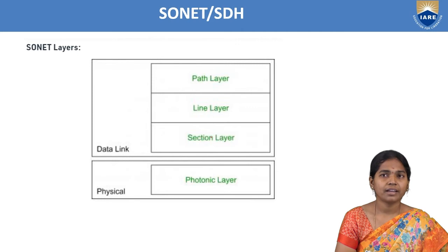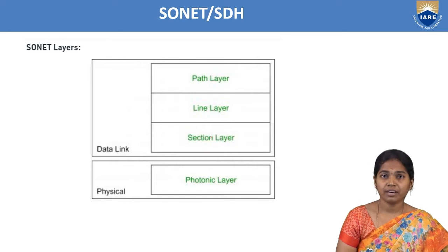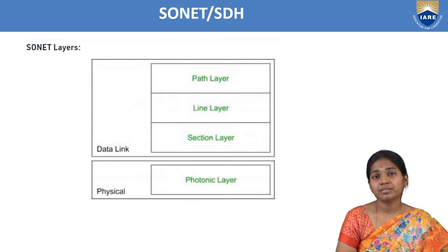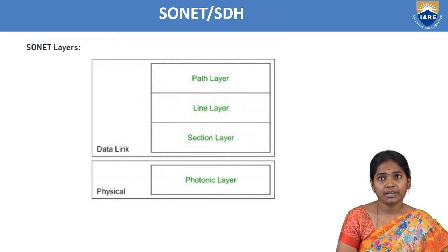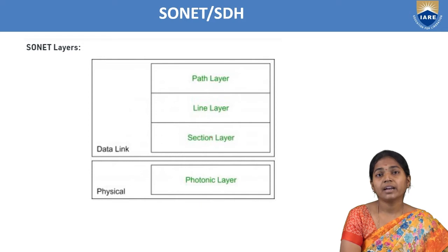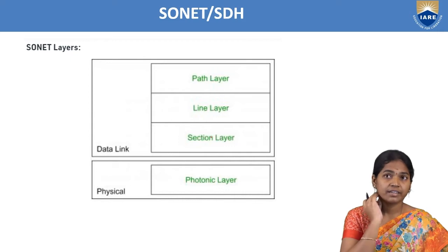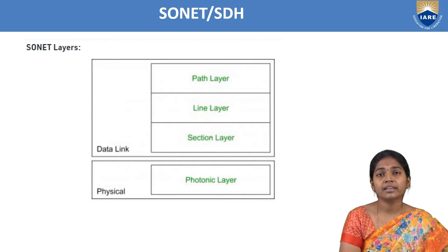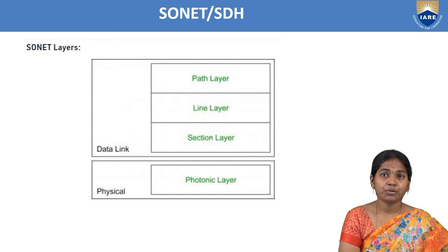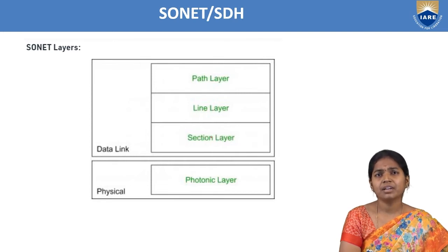Path layer, line layer, and section layer come under the data link layer, and the physical layer is the photonic layer. The section layer indicates whether the connection is live or not. The line layer determines if data is transmitted from STS to add drop multiplexer, STS to STS, or add drop multiplexer to add drop multiplexer. The path layer handles how data can be transmitted from source to destination.